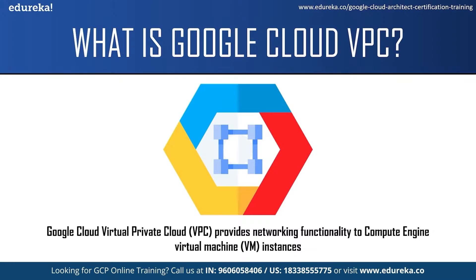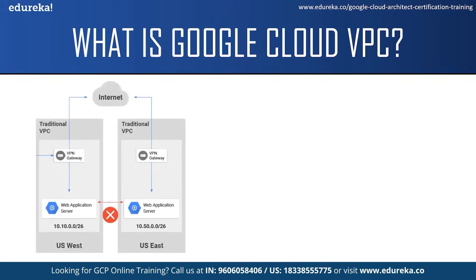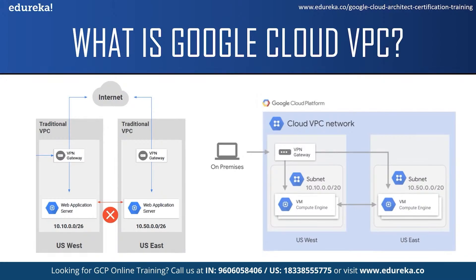Google VPC is quite different from the VPC of other cloud service providers. In the traditional VPC provided by other cloud service providers like AWS, the architecture would have two VPCs built with two different subnets in two different regions which are US East and US West. The virtual machine in one region can access the internet and communicate with the other virtual machine only through the VPC gateway which acts as an interface. In the traditional VPC, one virtual machine cannot directly communicate with the other. In the Google version of VPC, it is a global construct — instead of creating a VPC in US West and another in US East, you just create one VPC and put the subnets in different regions within that VPC.